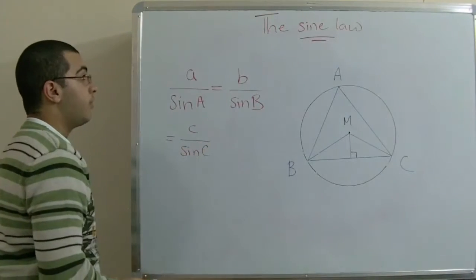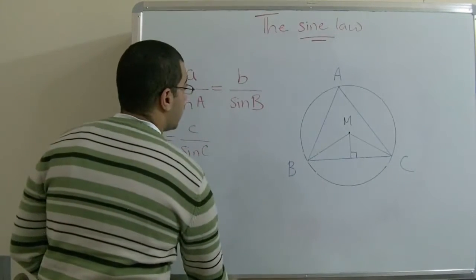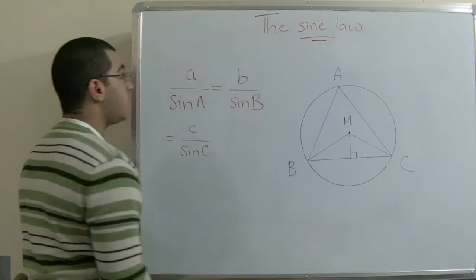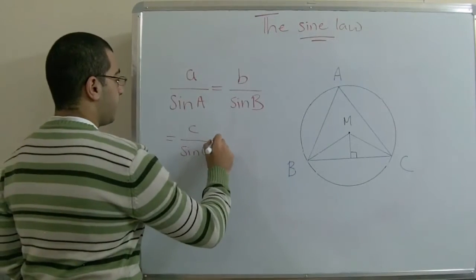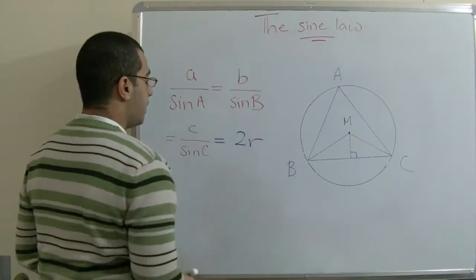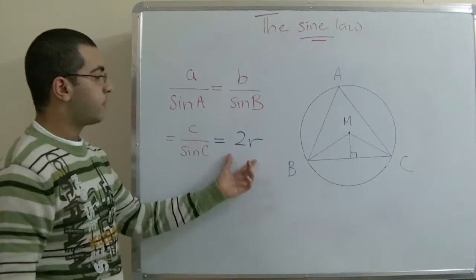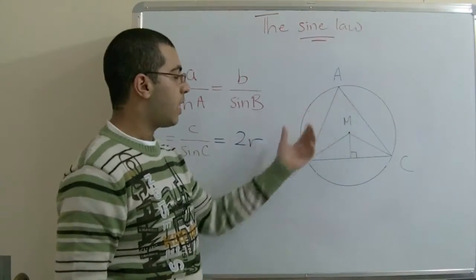Today we will learn about a new value of the sine law which is 2R, and R here stands for the radius of the circumcircle of the triangle.